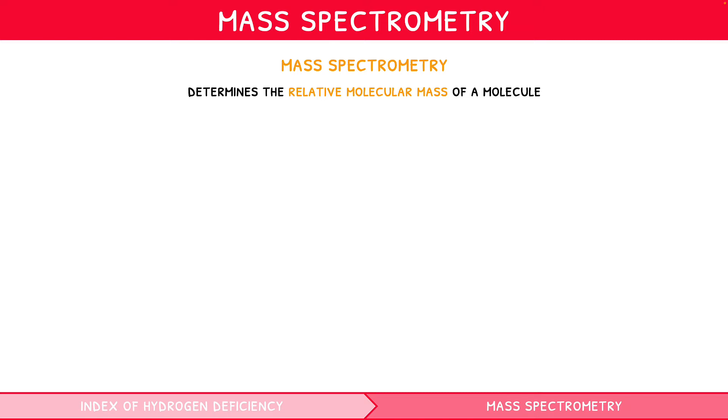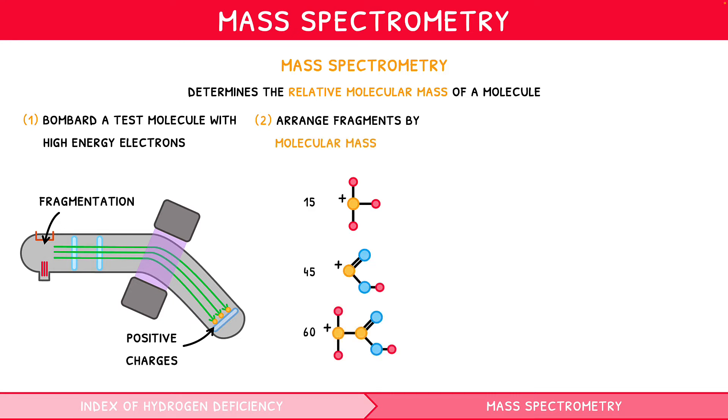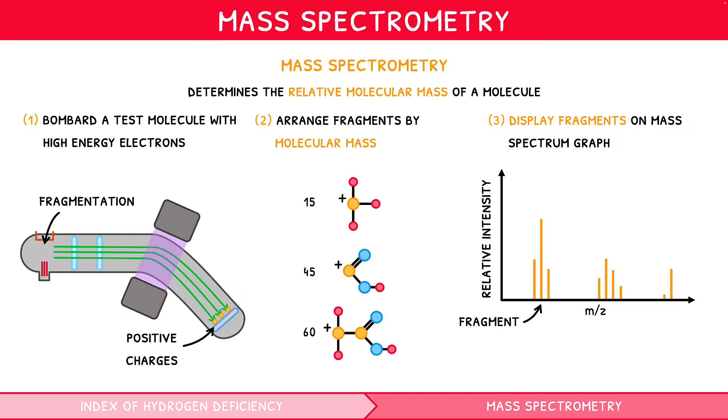The process involves bombarding a test molecule with high-energy electrons to cause fragmentation, the process of splitting into multiple positively charged fragments. These fragments are then arranged by molecular mass to produce a fragmentation pattern that reflects the constituent parts of the test molecule. This can be displayed using a mass spectrum graph, showing relative intensity over molecular mass. Each vertical line indicates a positively charged fragment of the molecule, and the gaps between lines indicate the parts of the molecule lost to form these residual fragments.